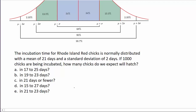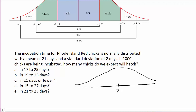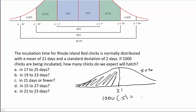For part C, it asks about 21 days or fewer. We're looking for all of the area to the left of the mean. We know the entire area under the curve is 1, so that would be 50% of them will hatch. So how many would that make? That's 1,000 times 0.5, which equals 500 chicks.